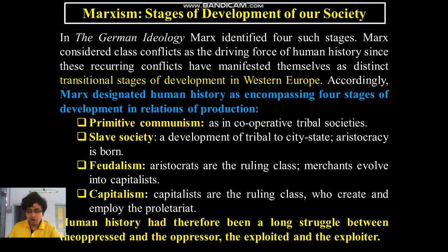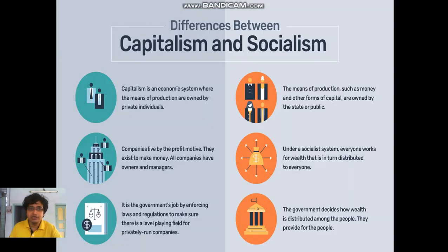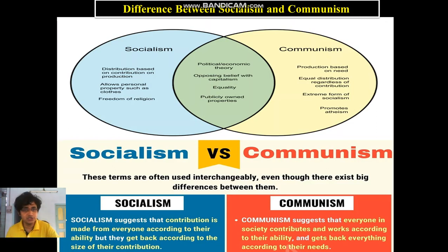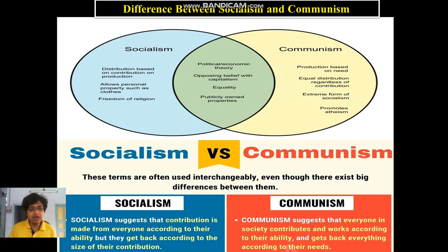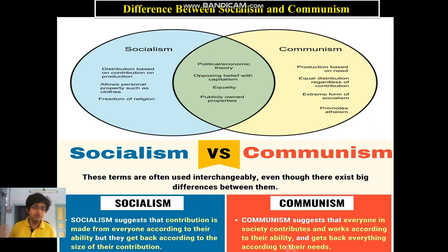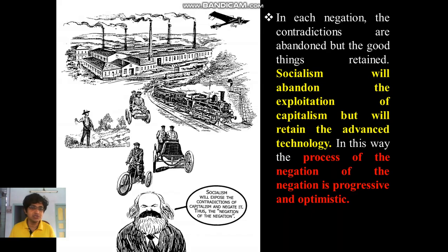Marx said that human history had therefore been a long struggle between the oppressed and the oppressor — the conception of class struggle. I discussed the difference between socialism and communism. According to Marx, communism is the ultimate form of a dream society — a classless society for which we should strive. Socialism is actually a transitory age between capitalism and communism. In socialism, contribution is made from everyone according to their ability, but they get back according to their size of contribution. In communism, everyone contributes according to their ability and gets back according to their need.